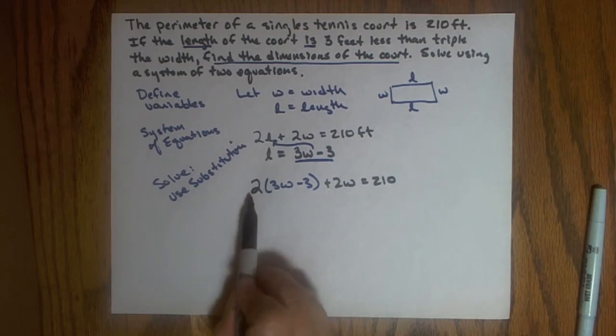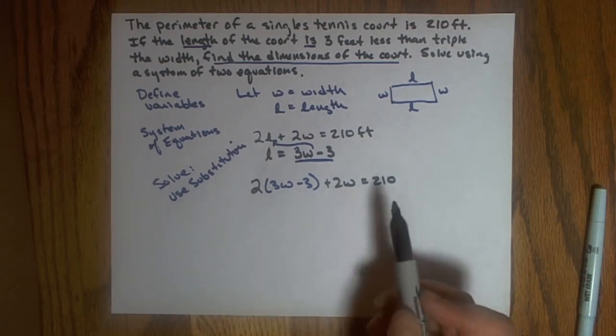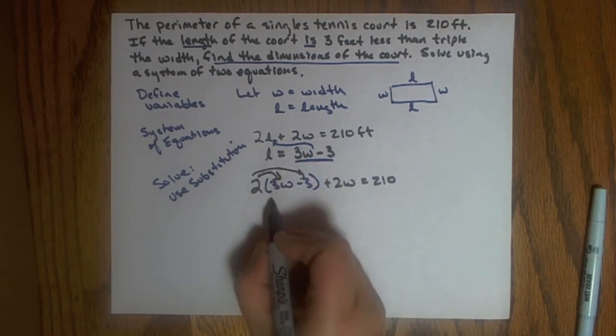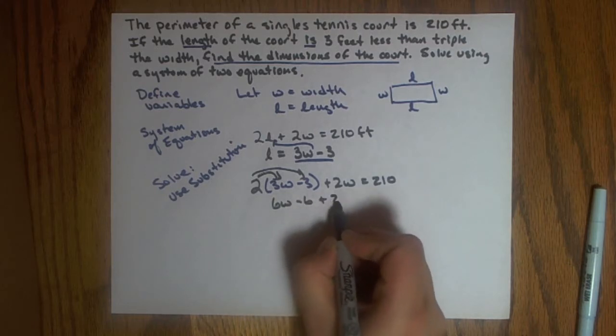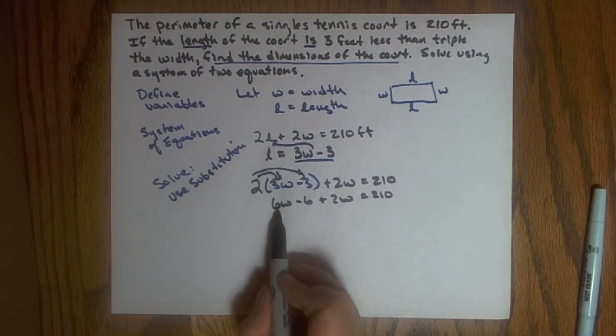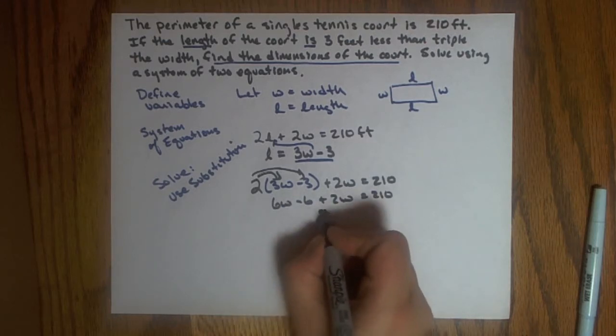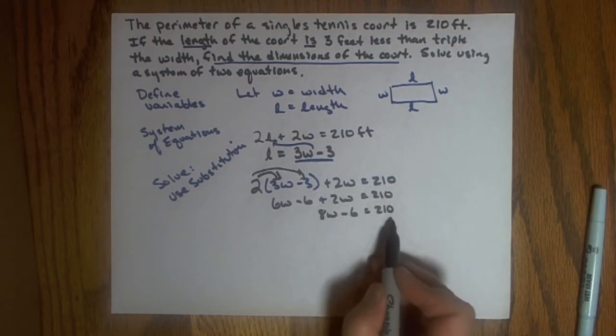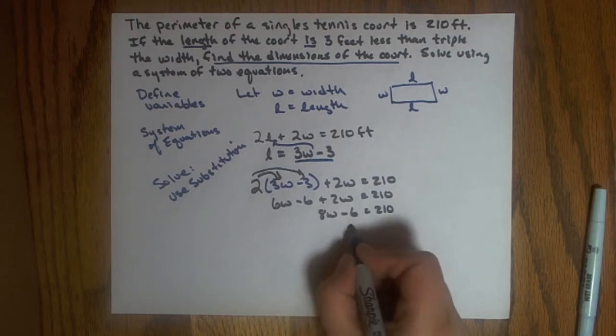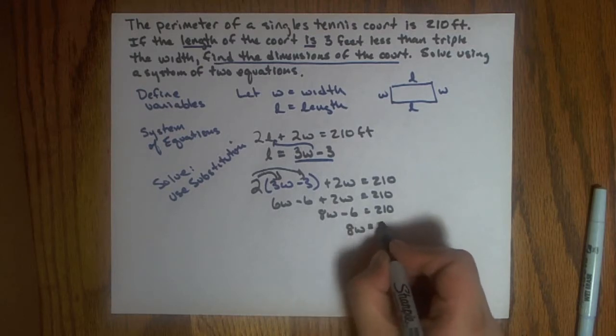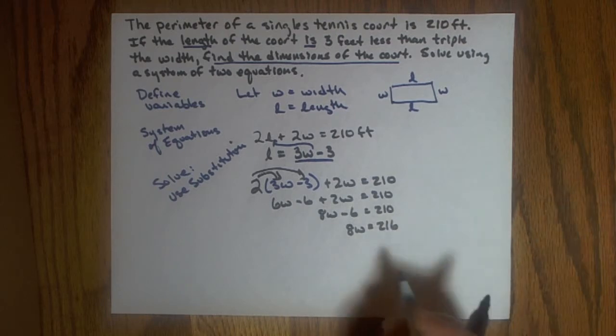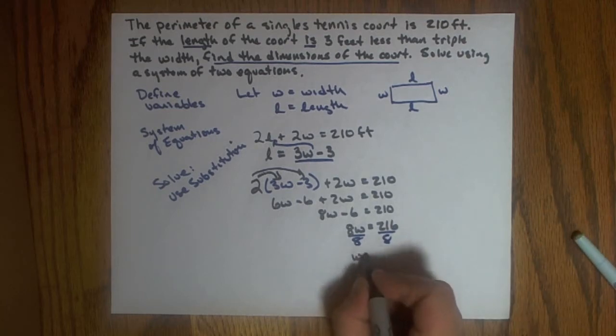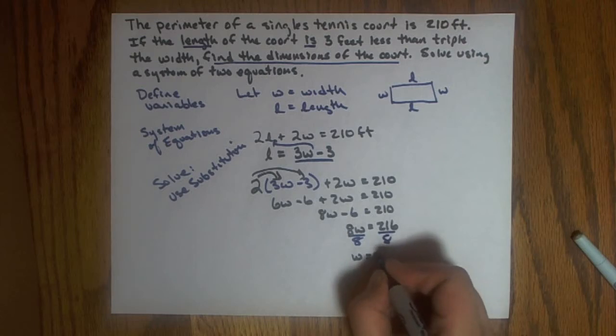Now at this point, I'm in a good spot because I have an equation that just has one unknown, and I know how to solve that. I'll use my distributive property to simplify the left-hand side: six W minus six plus two W equals 210. Combine like terms: six W plus two W is eight W minus six equals 210. I'm going to add six to both sides of the equation, so I can eliminate the six on the left, and I'll have eight W equals 216. And finally, I'm going to divide by that coefficient, that eight, and I will get W equals 216 divided by eight, which is 27.